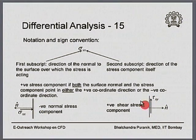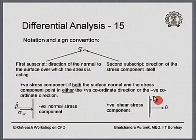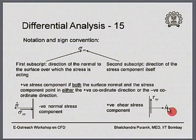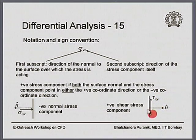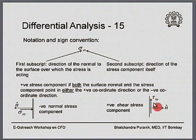Looking at the right picture: the surface normal points in the positive x-direction. It is a shear stress component pointing in the positive y-direction, so it is tau with first subscript x and second subscript y. Both the surface normal and the stress component are respectively pointing in positive coordinate directions — one in positive x and the other in positive y — and therefore this shear stress component is treated as positive.